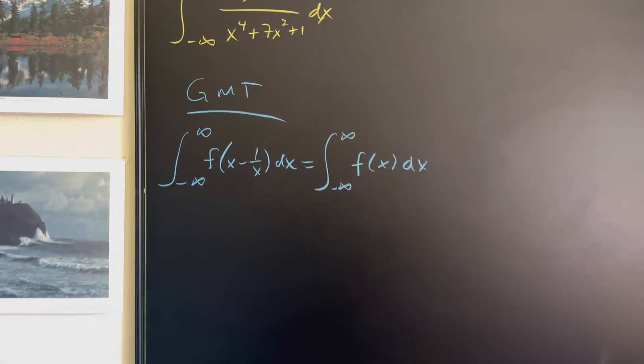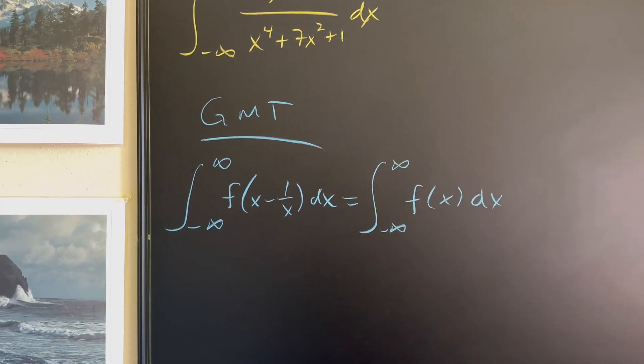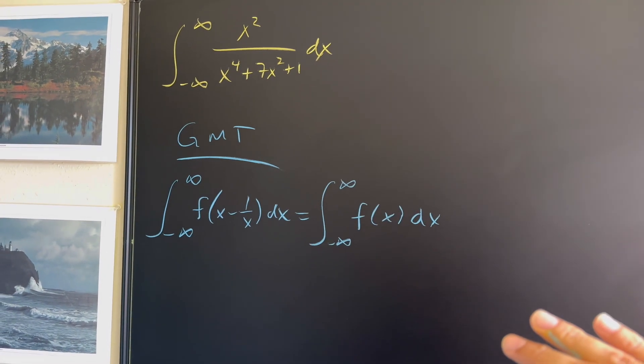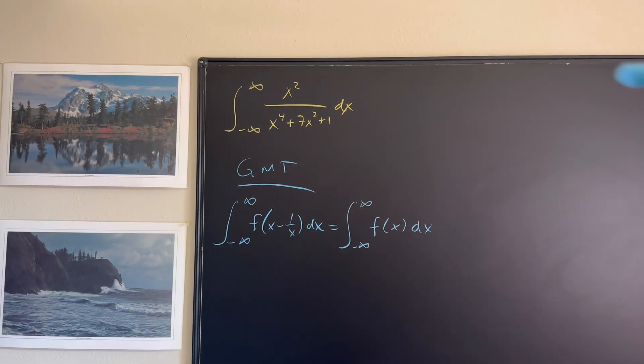And look at how powerful that is, because if we have an integral that has x minus one over x in that form, then we can simply just get rid of that and write it as a simple integral from negative infinity to infinity of f of x. And that's exactly what we're going to do here on the top.